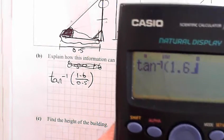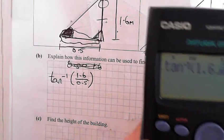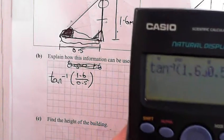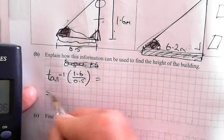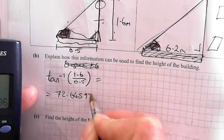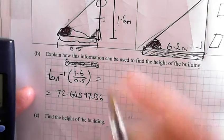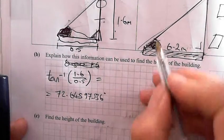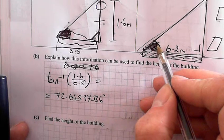Tan, 1.6 over, so the fraction button, 0.5. Alright, 72.64597536 is the angle. So write down the whole thing, that's the degrees, that's the angle there. So this angle is the same, 72.64597536 degrees.